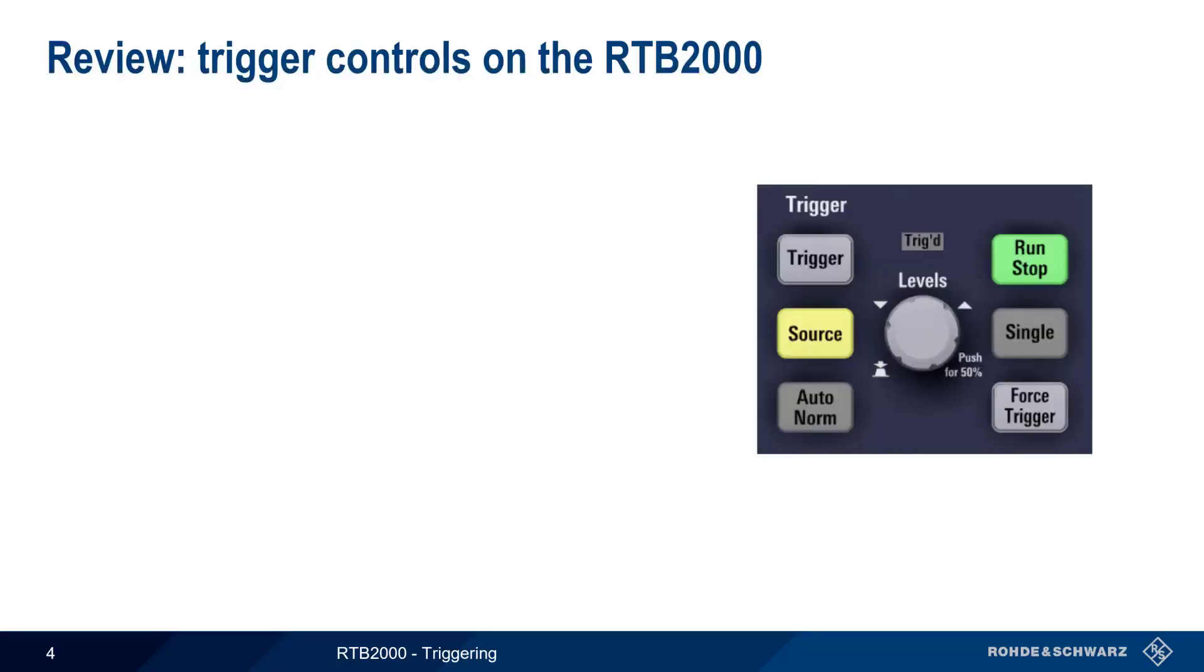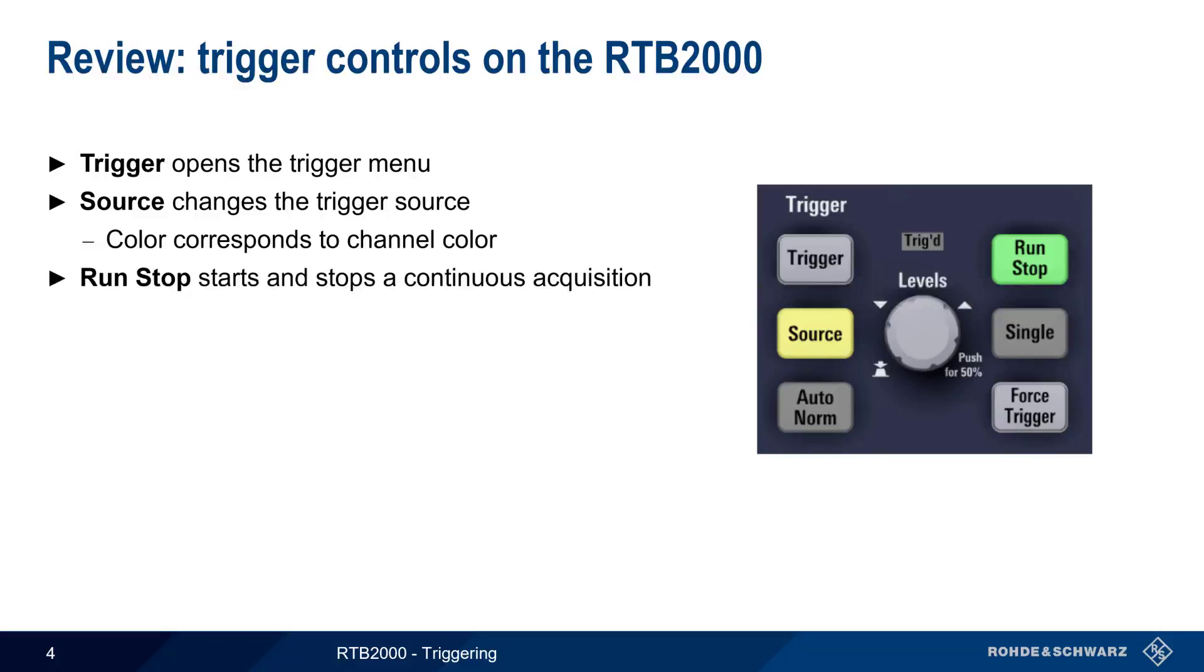Let's review the basic RTB trigger controls. The trigger button opens the trigger menu, and source is used to specify the source of the trigger signal. In most cases, this will be one of the RTB's analog channels, and the color of the key will match the color of the source channel. To start or stop a continuous or repeated acquisition, use Run-Stop, which will illuminate green when running and red when stopped.